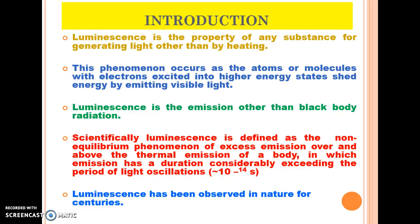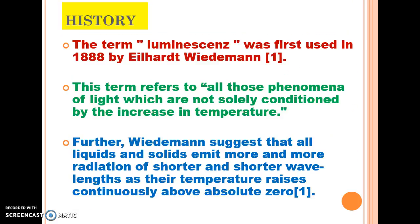Luminescence has been observed in nature for centuries. About the history of luminescence: the term luminescence was first used in 1888 by Eilhard Wiedemann. This term refers to all those phenomena of light which are not solely conditioned by the increase in temperature. Further, Wiedemann suggests that all liquids and solids emit more and more radiation of shorter and shorter wavelengths as their temperature rises continuously above absolute zero.